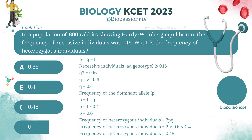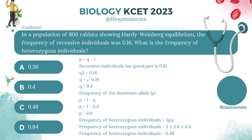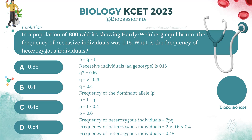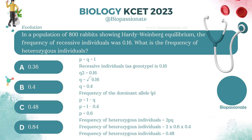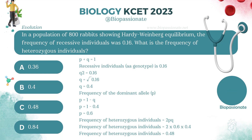In a population of 800 rabbits showing Hardy-Weinberg equilibrium, the frequency of recessive individuals was 0.16. What is the frequency of heterozygous individuals?